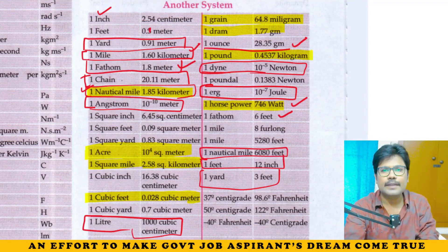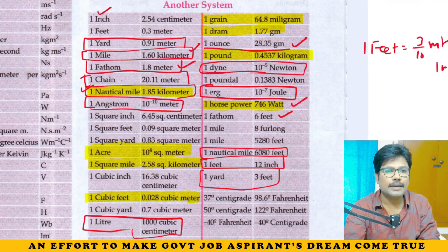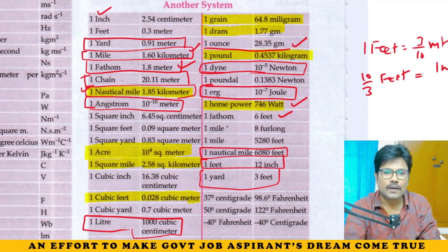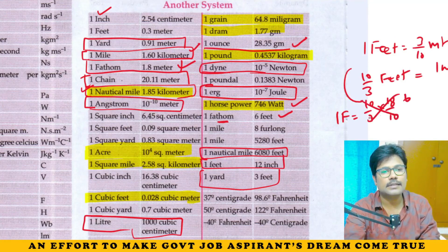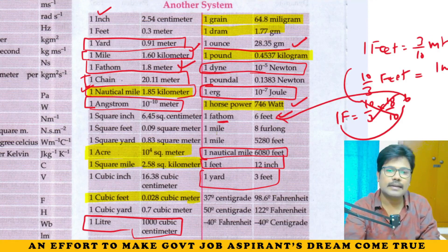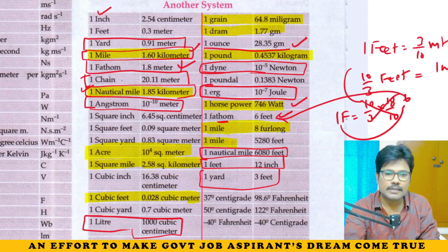1 foot is equal to 3/10 meters, so 1 meter is equal to 10/3 feet. 1 fathom is equal to 1.8 meters; multiplying 10/3 by 1.8 gives 6, so 1 fathom equals 6 feet. 1 mile is equal to 1.6 kilometers and also equals 5280 feet.